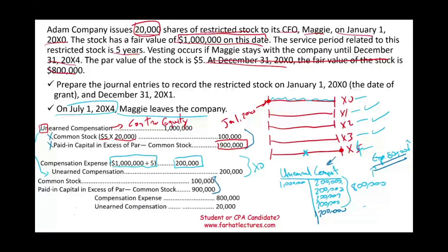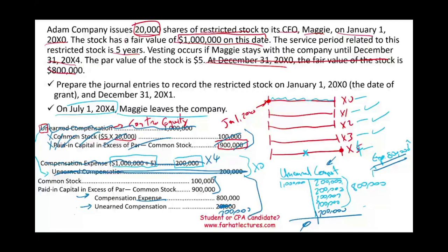We'll debit common stock and credit paid-in capital, thus removing those two. We credit unearned compensation $200,000 — and by doing so, unearned compensation is gone; that $1 million is gone. Then we credit compensation expense $800,000, and all the compensation expense is gone. The journal entry removes everything that was done thus far, as if the restricted stock options never took place — removing their effect from anywhere on the financial statements.